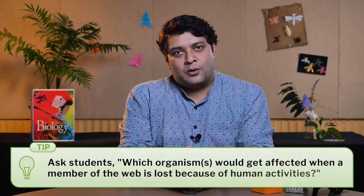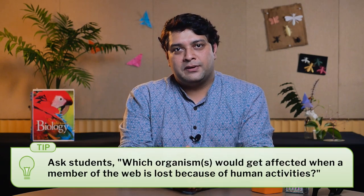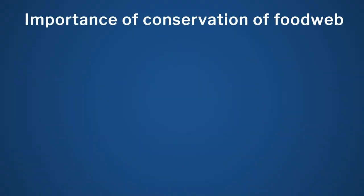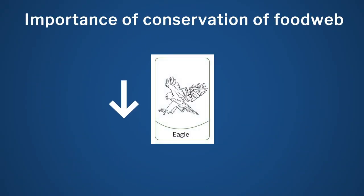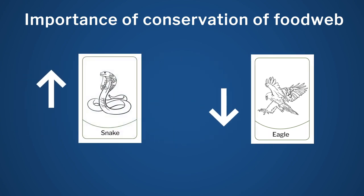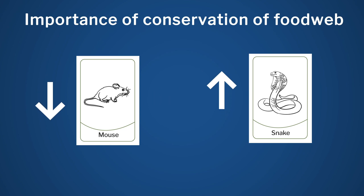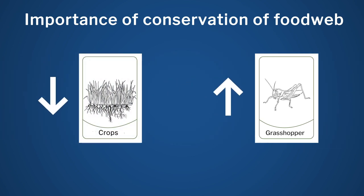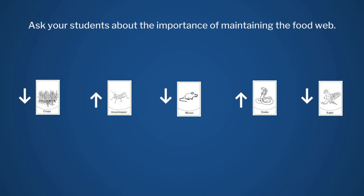Let students sit in the groups they have already formed. Ask them to use the food web they recently developed or draw a new one. Ask students to identify a member of that food web which, if removed or lost due to human activity, what will happen to the food web. For example, if eagles are hunted in large numbers, there will be too many snakes, who will in turn eat a lot of mice. If the mice population is reduced, it will allow lots of pest insects to grow and feast on crops and so on. Ask students what they think about maintaining this food web or helping species to survive — you will be pleasantly surprised with their answers.